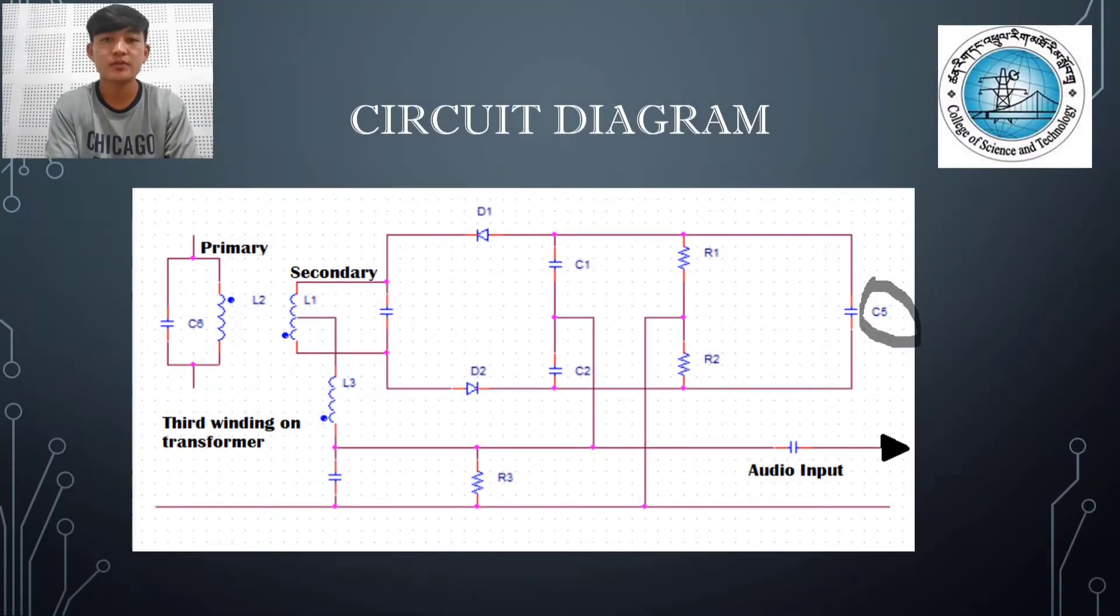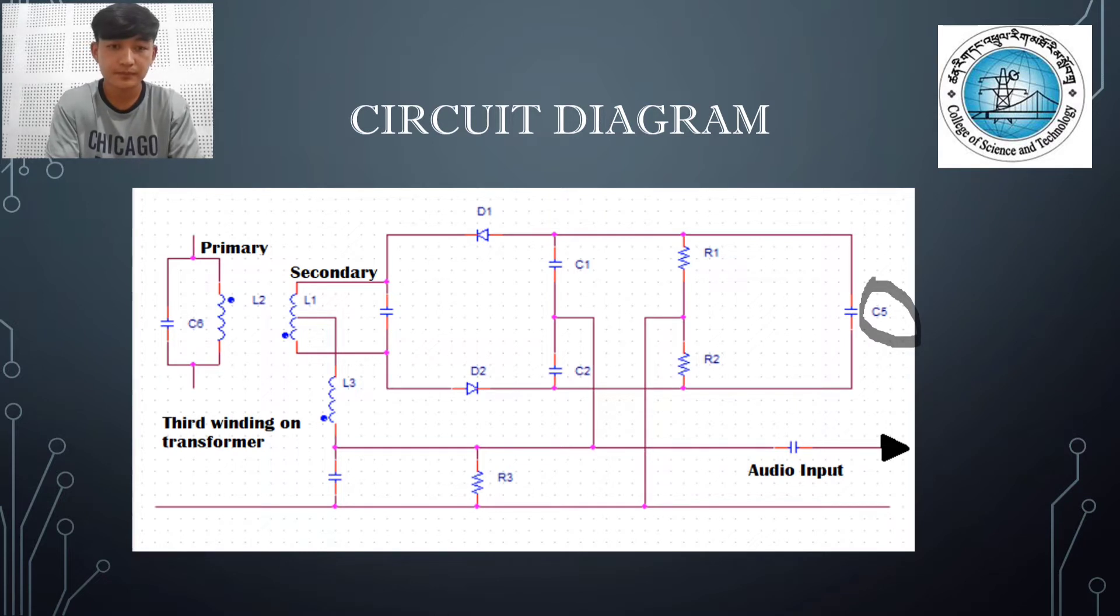This is the circuit diagram of the ratio detector. Now I'm going to explain the circuit diagram. This one is primary, secondary, third winding on the transformer, and audio input. The ratio detector was the most popular because it provides a high level of amplitude modulation rejection.